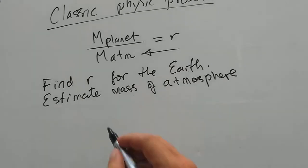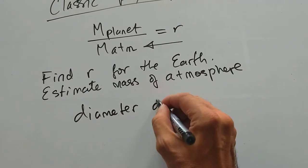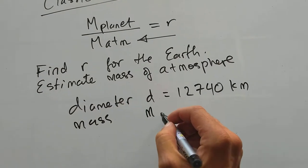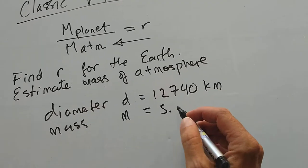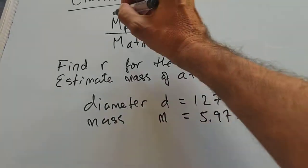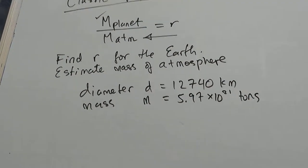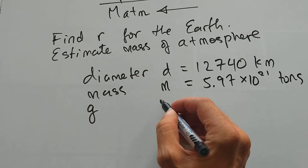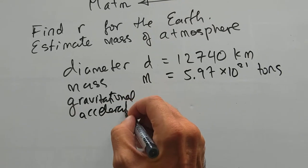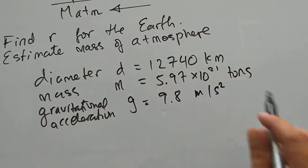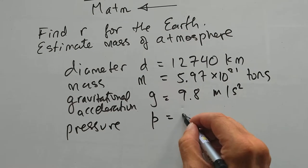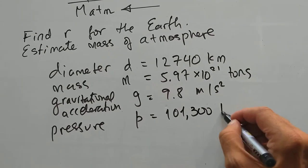We're given some primary data about the Earth. We have the diameter of the Earth, D is 12,740 or so kilometers. Mass of Earth, M, is 5.97 times 10 to the 21 tons. We have the gravitational acceleration, G, that's 9.8 meters per second squared for the Earth. And one last thing we need is the pressure of the atmosphere, P, about 100,000 pascals.